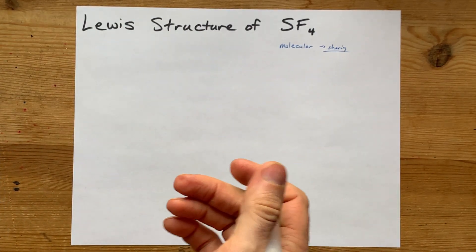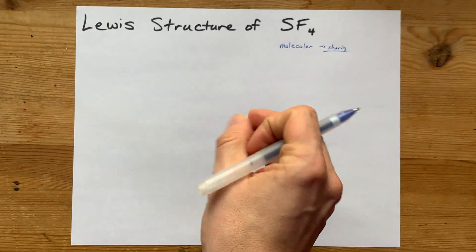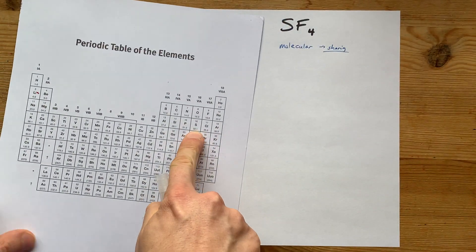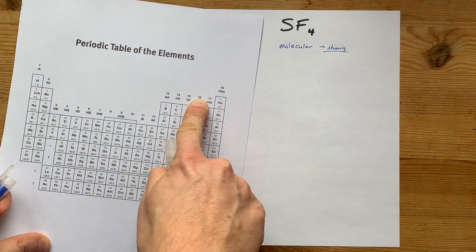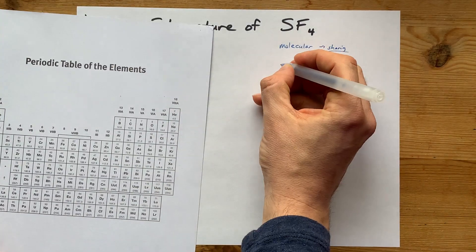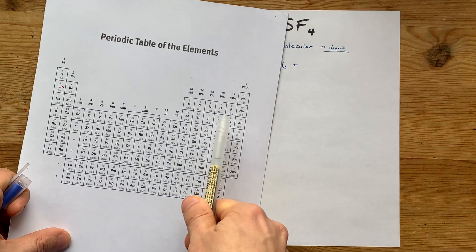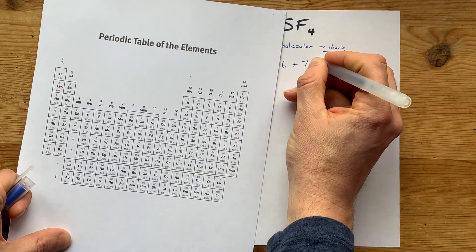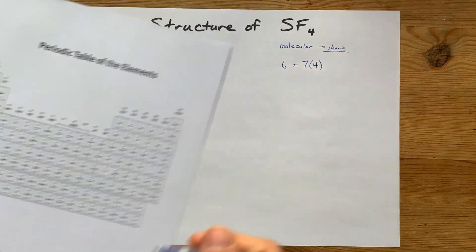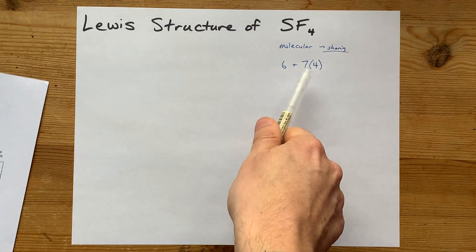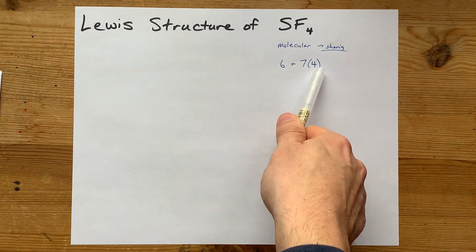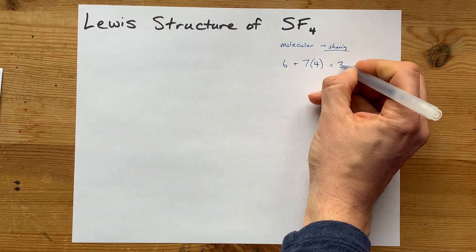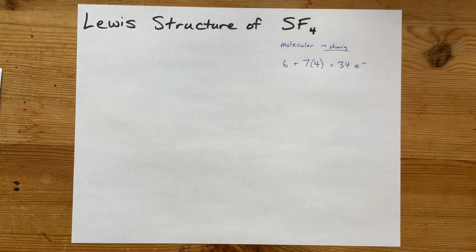The way that I draw molecular Lewis structures is to start by counting the valence electrons that the molecule has. Sulfur brings six valence electrons with it. Fluorine brings seven valence electrons, but there are four of them, so seven times four is 28, and adding that to the six gives me 34 electrons total.